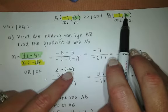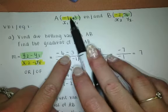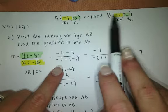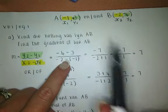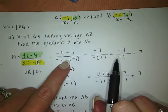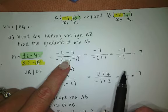So it's going to be minus 4 minus positive 3. And then at the bottom, minus 2 minus from the formula, negative 1. Negative 7 divided by negative 1 gives me 7. So the gradient of this line is 7.